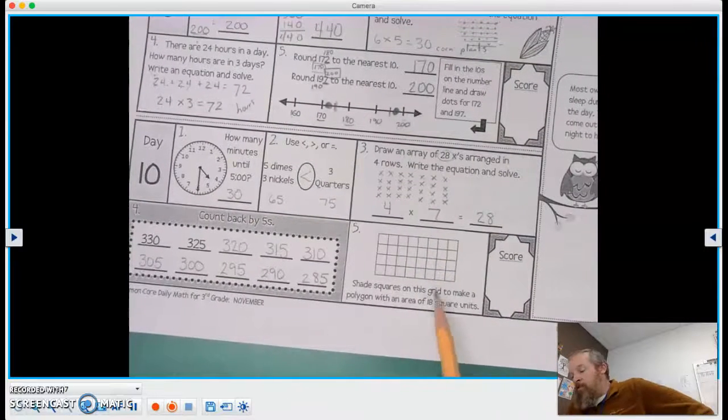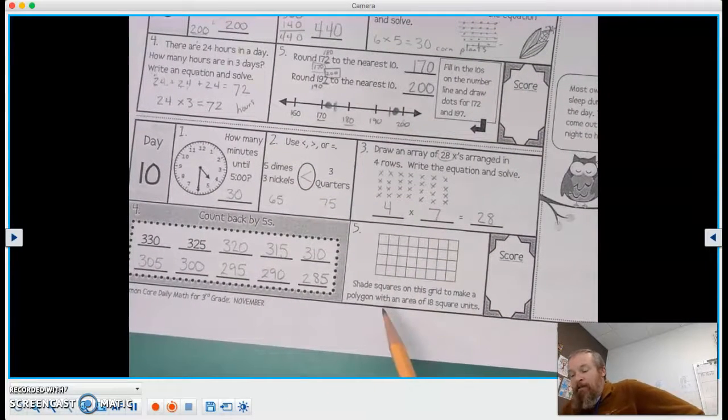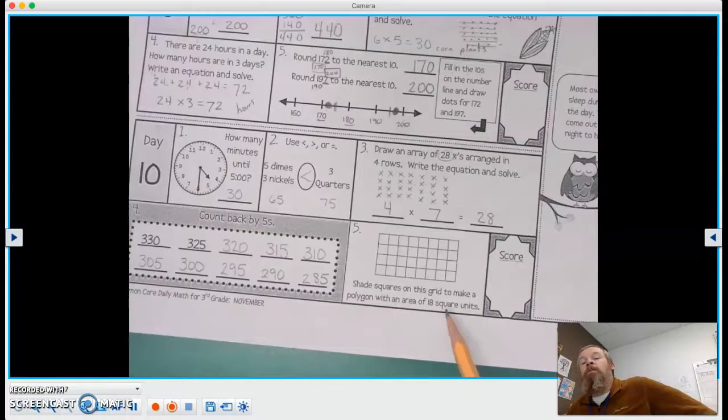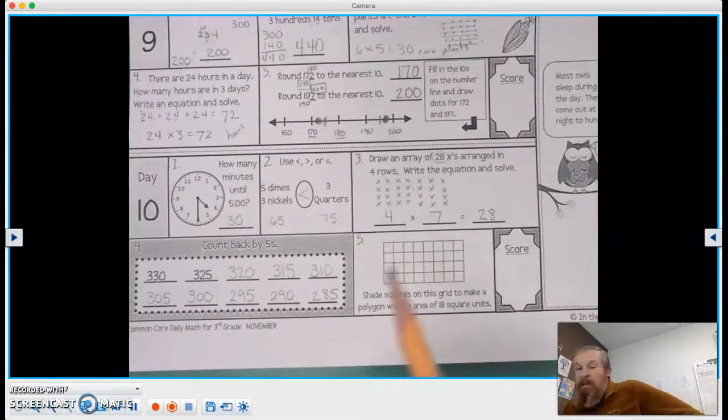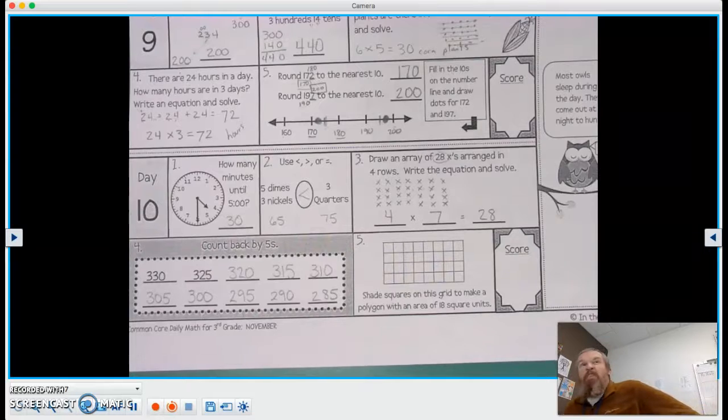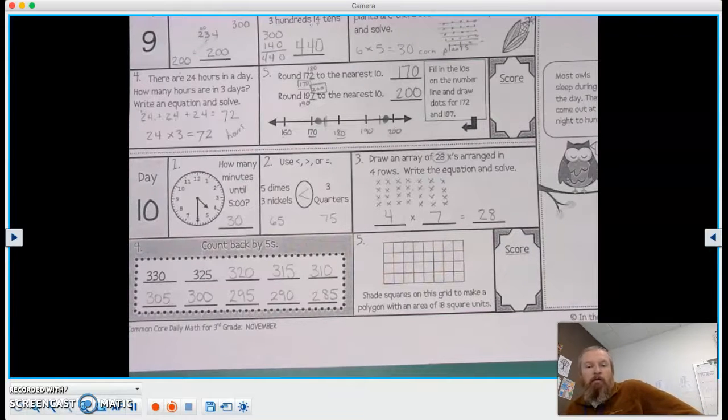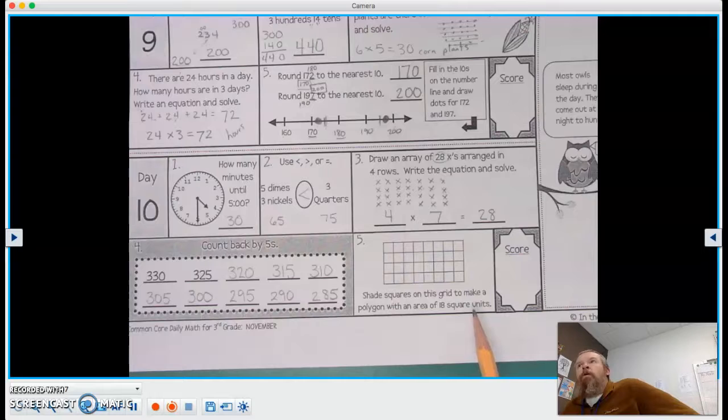This says, shade squares on this grid to make a polygon with an area of 18 square units. Basically, a polygon for what we need to classify it as today, we need a shape. 18 square units.